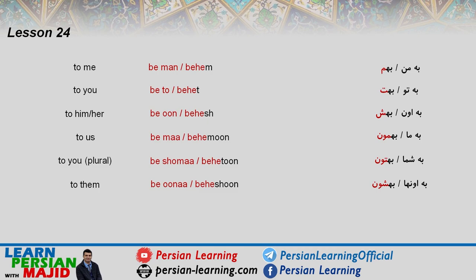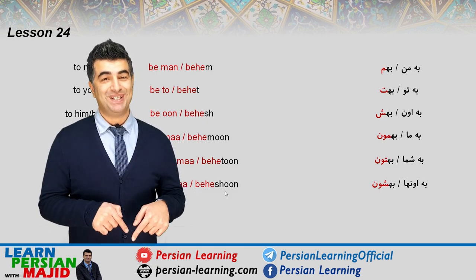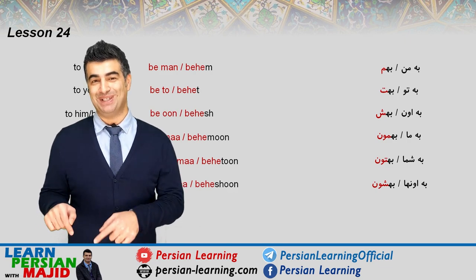Something important about the verb DADAN and some of its compound verbs: like English 'give something to somebody', it needs the preposition BE meaning 'to'. You can say BE plus the person, or use the more popular clitic forms: BEHEM, BEHESH, BEHET, BEHEMON, BEHETON, BEHESHON — don't forget to comment!